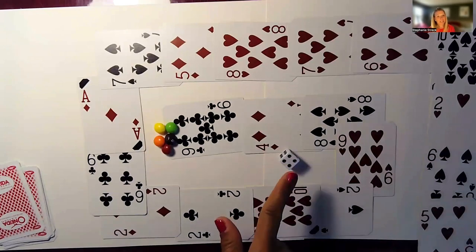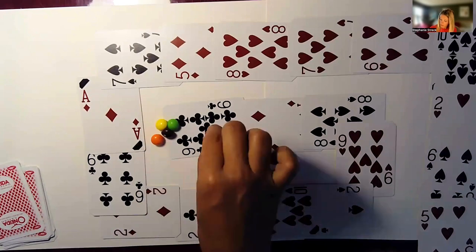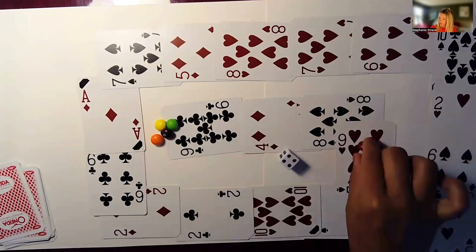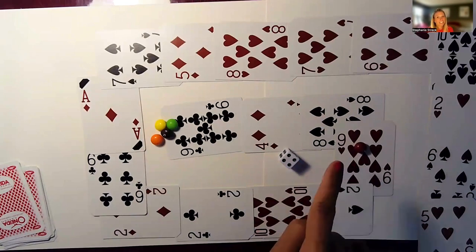You will roll the dice, and this tells me how many numbers I should move. If I'm red, I will move four cards: one, two, three, four. And now I will add the number on the dice to the number on the card, so nine and a four.